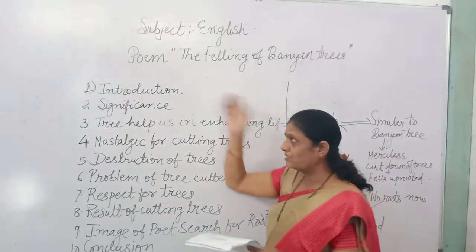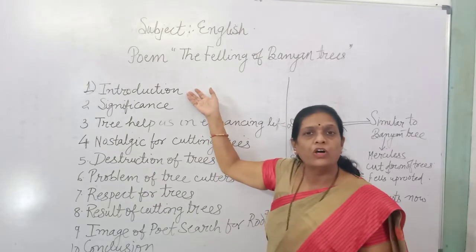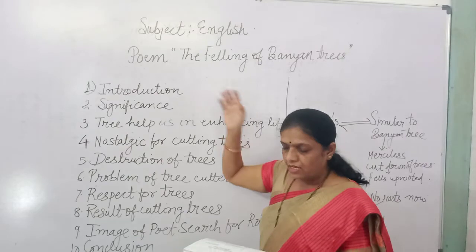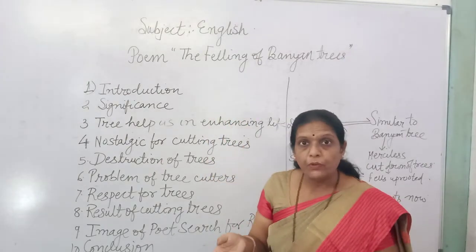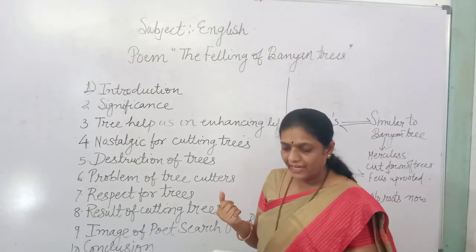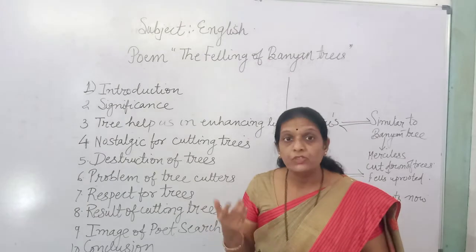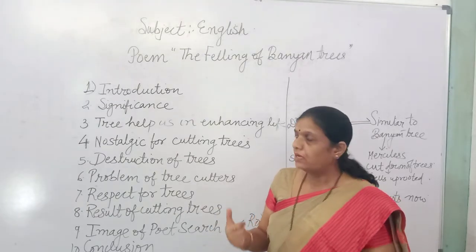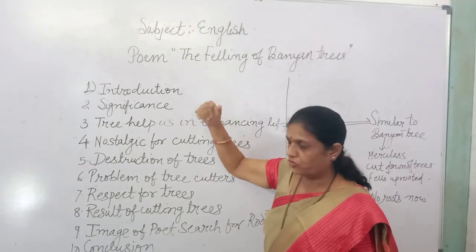The different points to include in the summary begin with the introduction of the author. As I told you yesterday, Dilip Chitre was born in 1938 and died in 2009. He was a teacher, painter, and bilingual poet who wrote in two languages — Marathi and English. He has written many poems, and 'Travelling in a Cage' is one of his most important works.